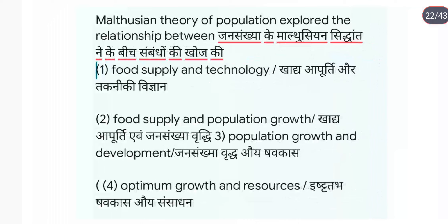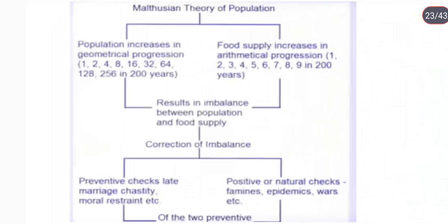Malthusian Theory of Population explored the relationship between food supply and population growth। Malthus ने बताया था कि population दुगनी दर से बढ़ेगी (1, 2, 4, 8...) लेकिन food supply arithmetic दर से बढ़ेगी (1, 2, 3, 4...)। इस imbalance को correct करने के लिए positive and preventive checks लेने होंगे — famine, epidemic यह सब आएगा, तब यह imbalance balance हो जाएगा।